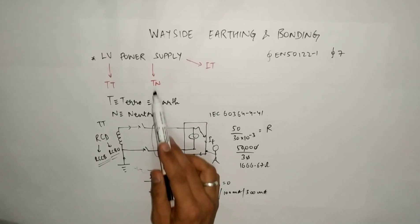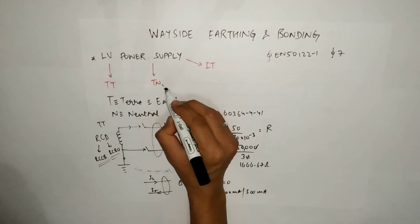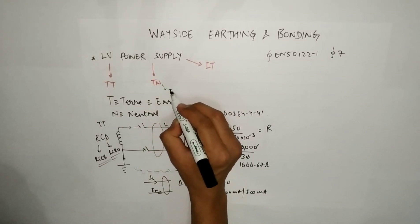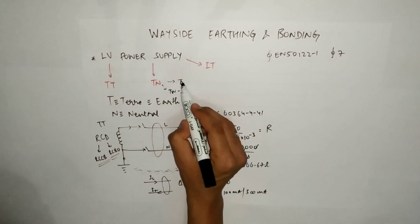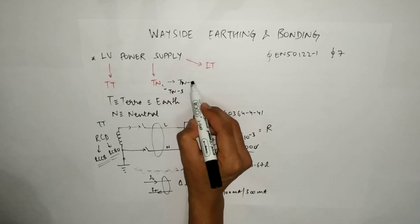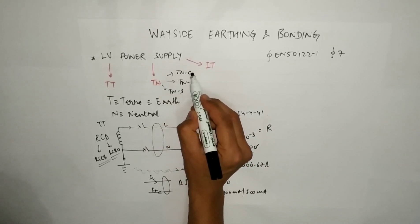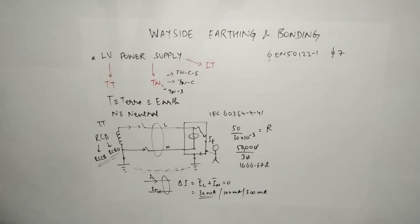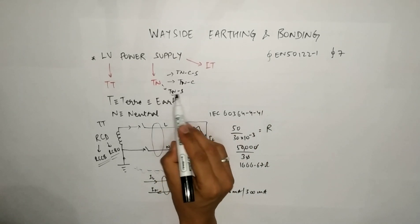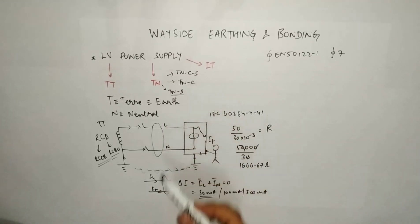In the case of a TN system, there are three options: TNS, which is the main one, then TNC, and TNCS. As per EN 50122-1, we only take care of TNS; however, I will explain the differences between all three.